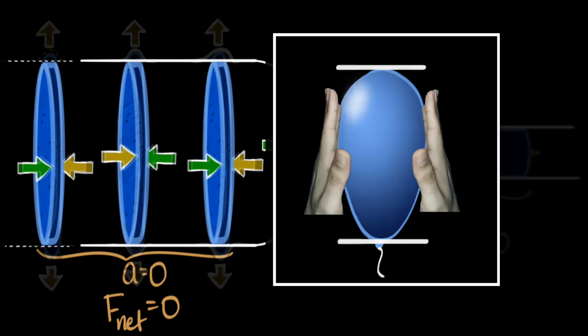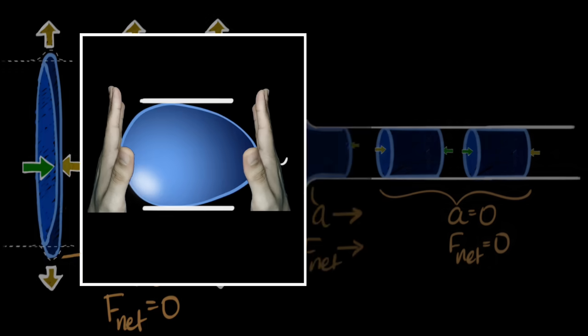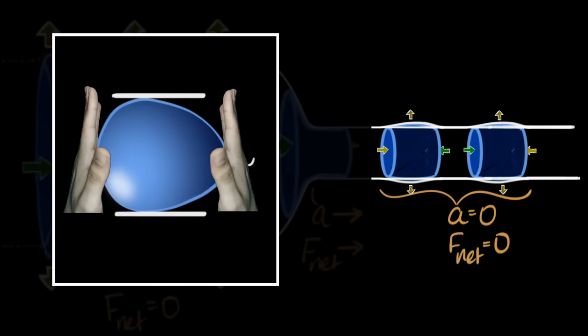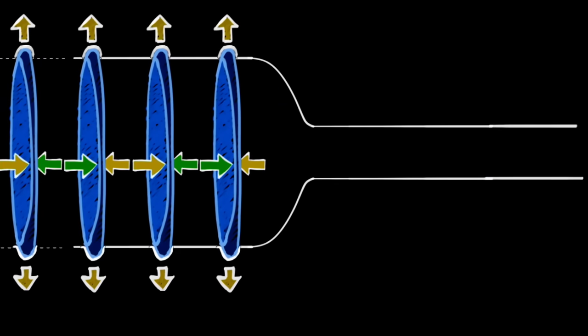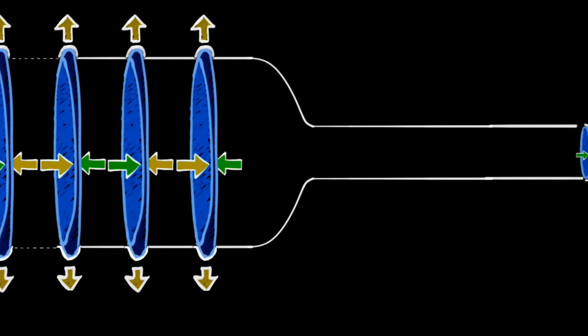And like a deforming balloon, the slow-moving pieces press more on the pipe compared to the fast-moving pieces. And there you go. As the water gets faster, its pressure reduces.